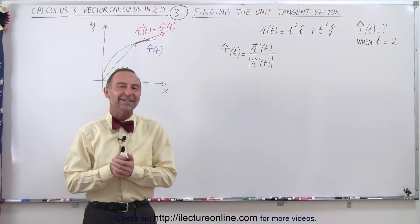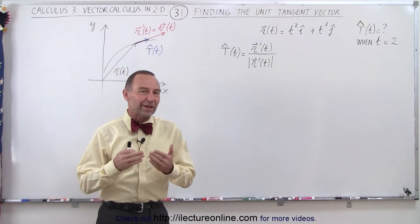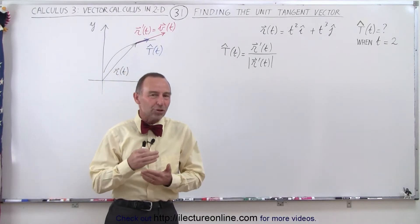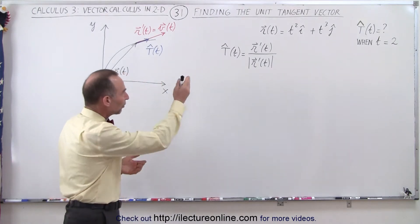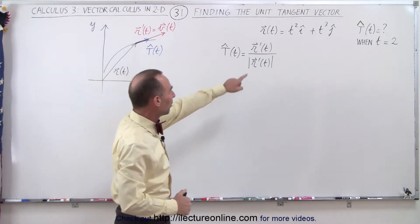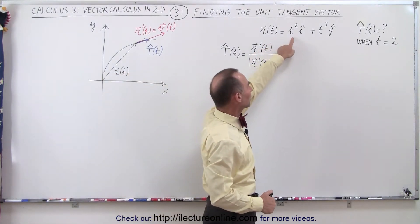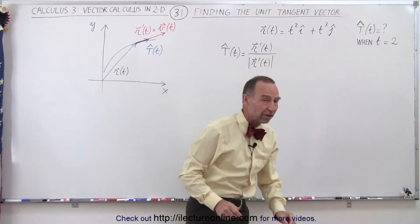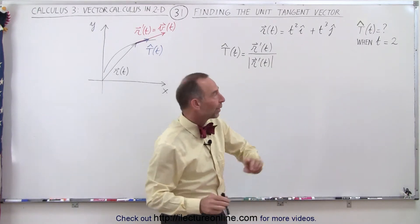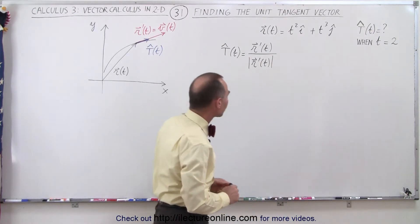Welcome to Electroline. In this video we're going to try to find the unit tangent vector for this particular position vector, t squared in the i direction plus t cubed in the j direction, for when t is equal to 2.